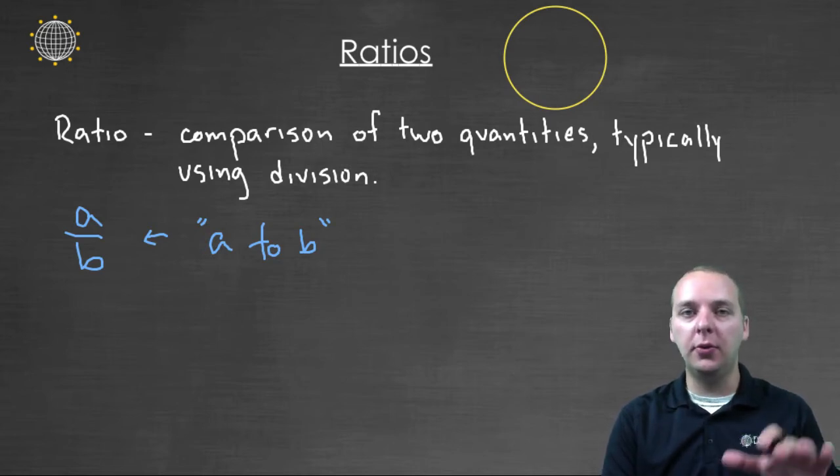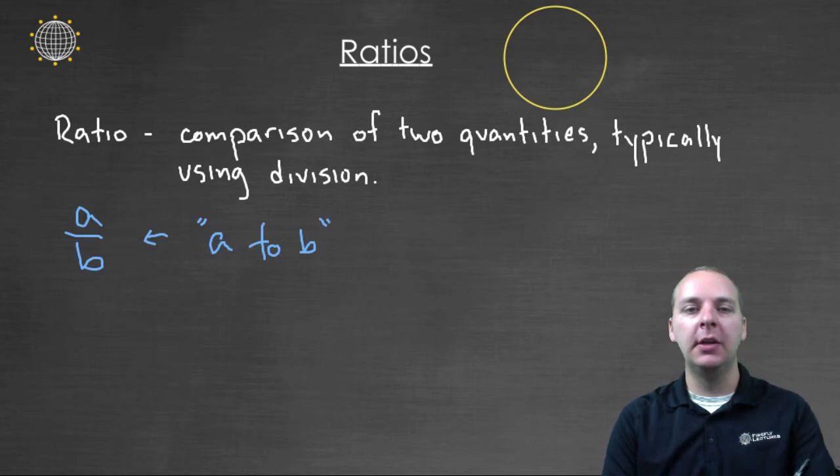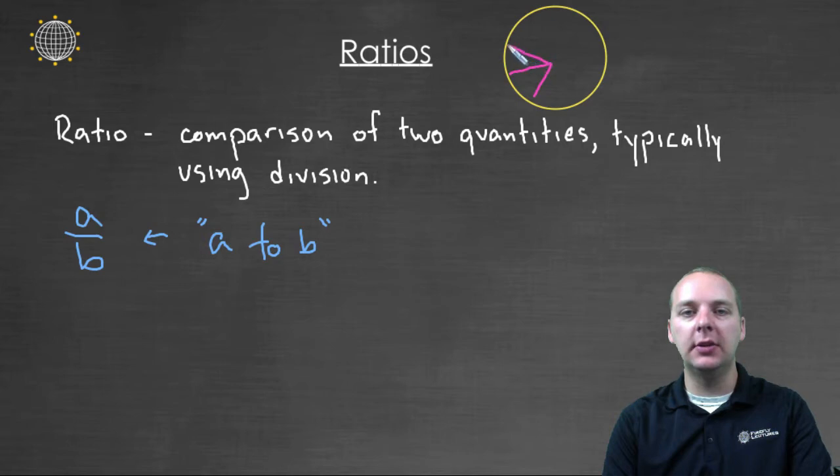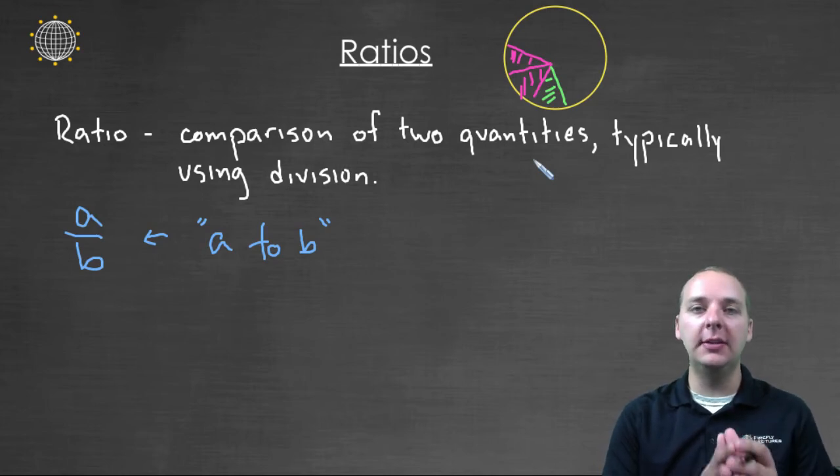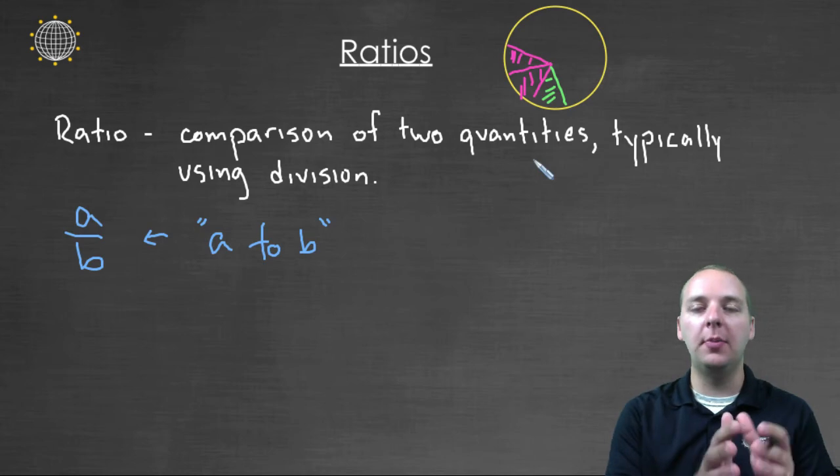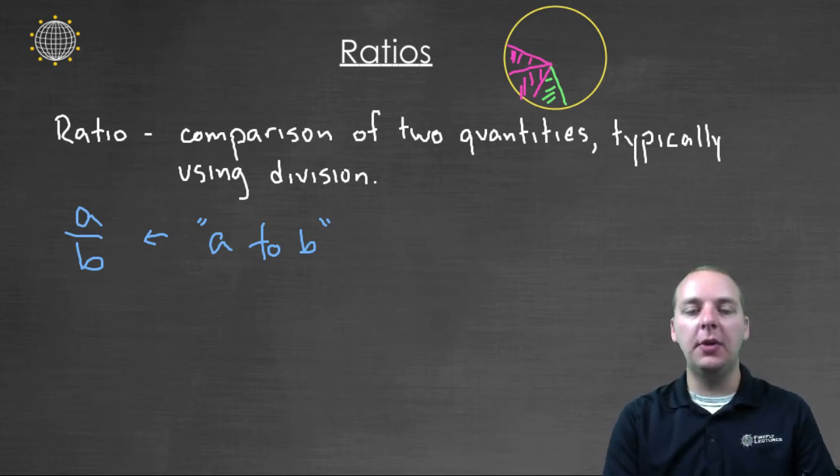...compared to my four year old son. So let's say for every two pieces of pizza that I eat, so here's two slices of pizza that I would eat, my son would probably eat only one slice, because he's much younger. And so that's the ratio two to one. Two to one represents the amount of pizza I eat, compared to the amount of pizza that my four year old son eats.